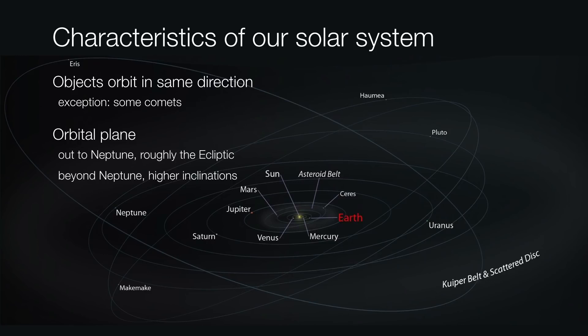But beyond Neptune, there's an abundance of highly inclined objects. These are the dwarf planets, the Kuiper belt objects, and so forth. They seem to be tilted above and below the plane of the ecliptic.